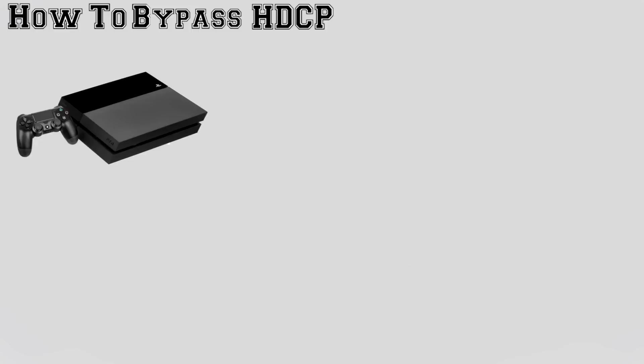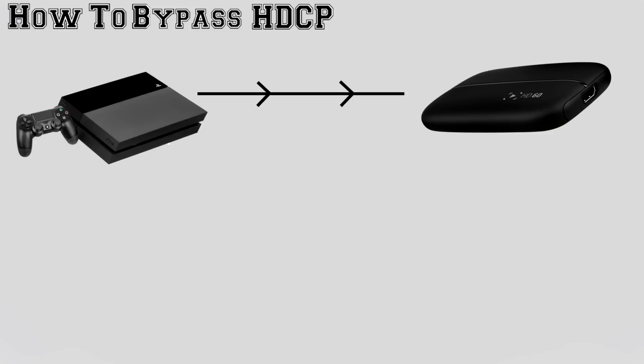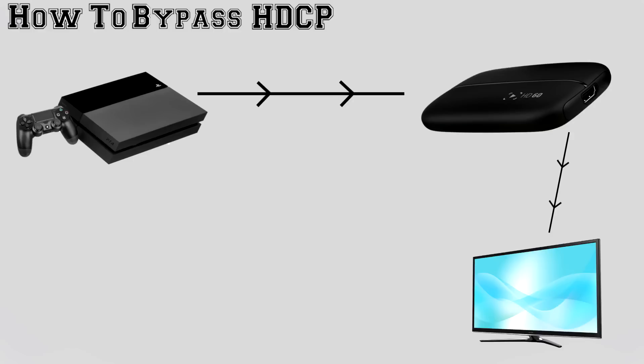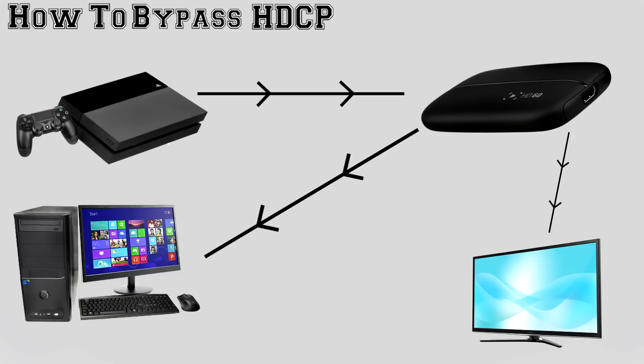For example, with my Elgato game capture, this would be the standard setup: my console's HDMI would connect directly to the Elgato, passing through it and then to my TV display. However, at the same time, the Elgato sends the content to your PC for recording, but this is only able to function if it does not detect an HDCP signal coming from the console, which you can actually manually turn off, but this limits your recording options.